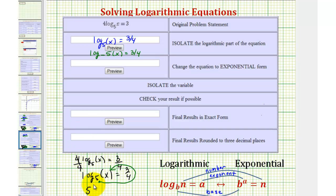So five to the three-fourths equals x. Normally, we prefer the x on the left, so we'll write x equals five to the power of three-fourths.